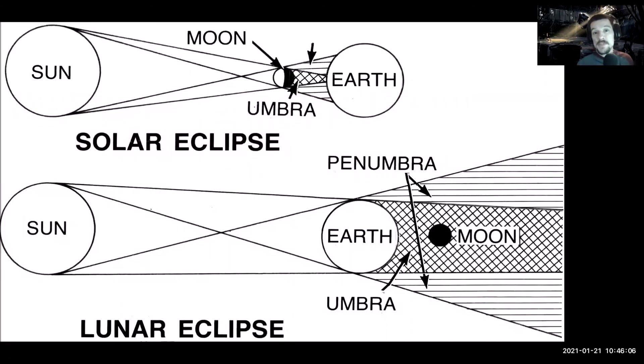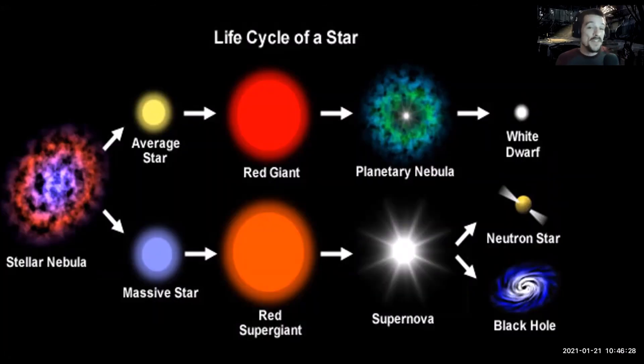And then the moon can cause solar eclipses or lunar eclipses. It all depends on where the moon is. As you can see, during a solar eclipse, the moon is in between the sun and the earth, whereas during a lunar eclipse, the moon is hiding behind the earth. So the earth is between the sun and the moon.